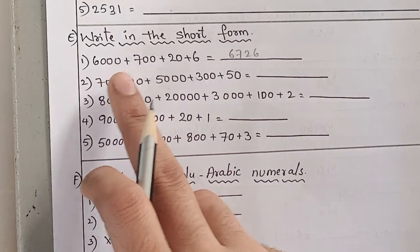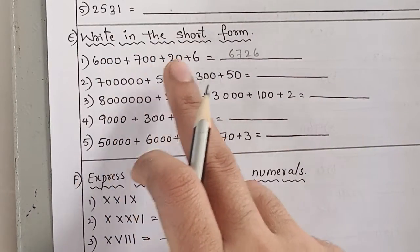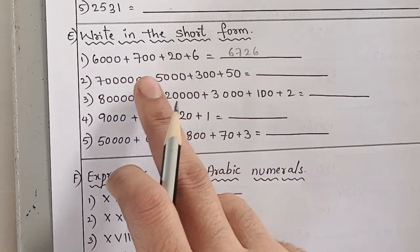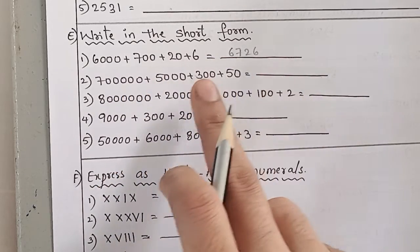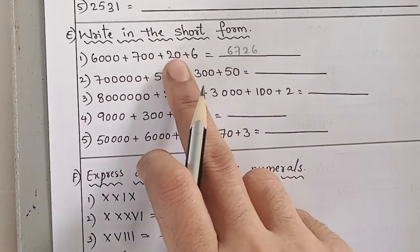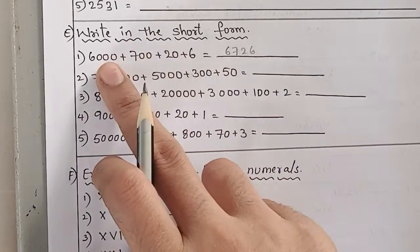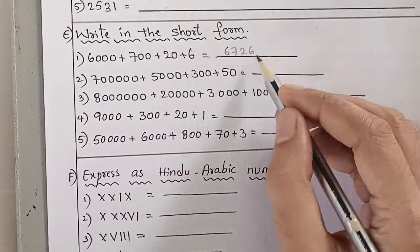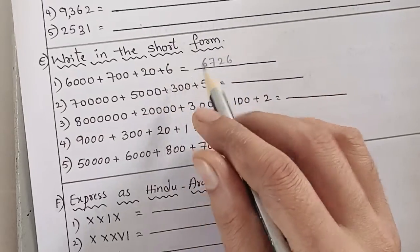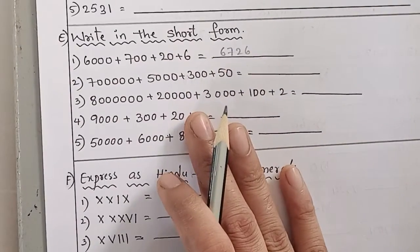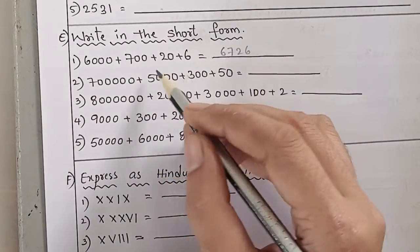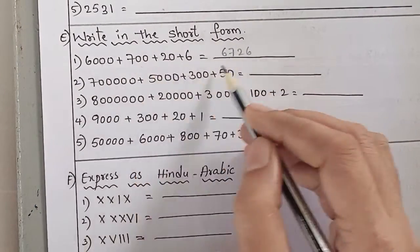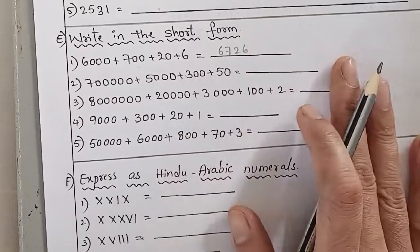First one: 6726. What do we need to write in short form? Ones place, tens, hundreds, thousands. So ones place is six, tens place we write two, hundreds place seven, thousands place six.